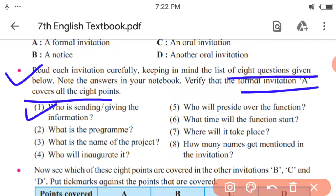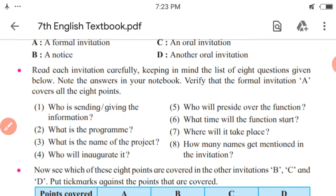So these are the four names who are sending or giving the information. Second question. What is the program? So it is inauguration of the project Seeing Eyes, Helping Hands. Third one. What is the name of the project? Name? Seeing Eyes, Helping Hands. So in this way, you have to answer all the eight questions taking the help of formal invitation given in the textbook. Let us go ahead.